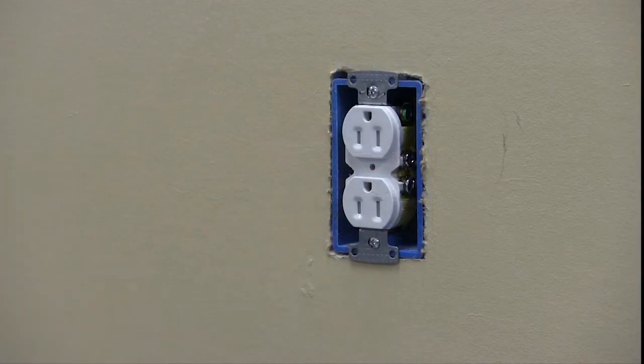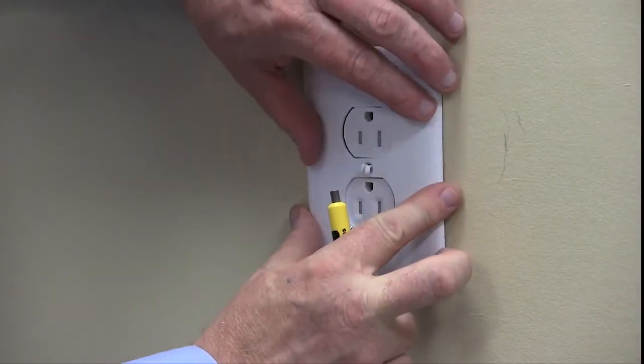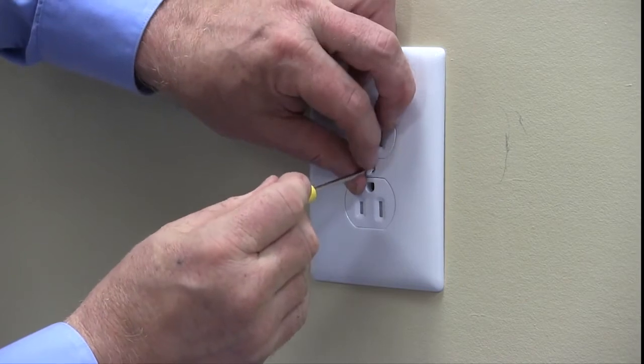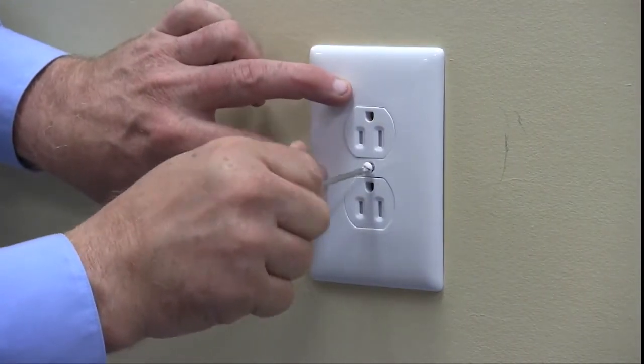Fold the wires, push them into the box, and mount the receptacle. Finish the outlet by fastening a wall plate.